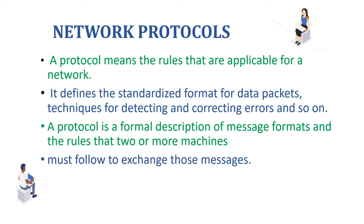Both of them will not be able to understand anything. To avoid this complication, we can give a rule stating that only one person can speak at a time. After the first person completes speaking, the second person will speak while the first listens. So we can implement certain rules to avoid chaos. This is what a protocol means — a set of rules that governs a network, which nodes must follow to communicate with one another.